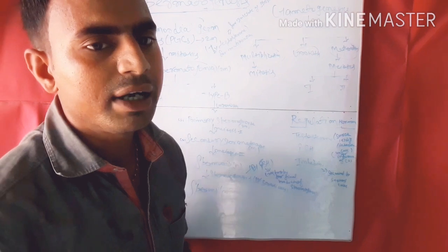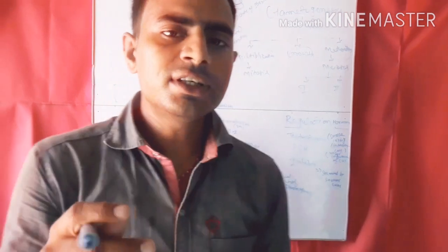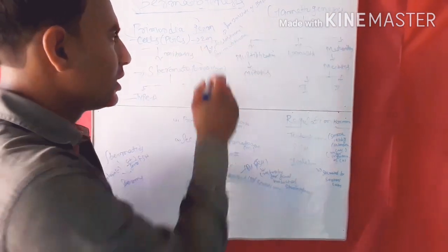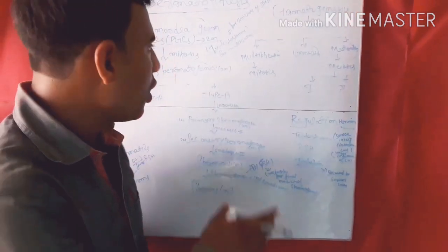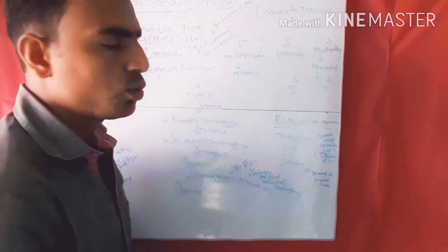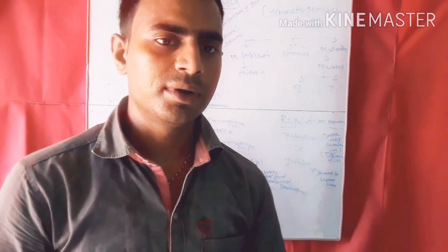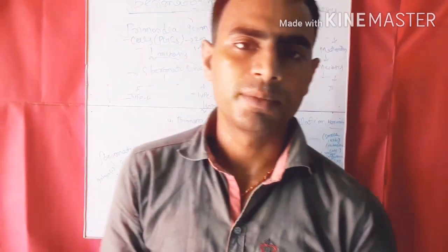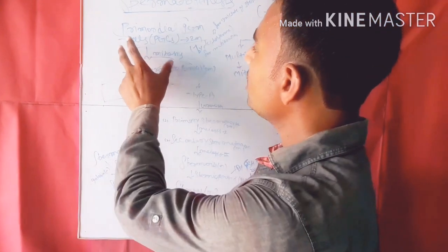In the wall of the seminiferous tubules there are cuboidal epithelium cells, known as primordial germ cells. These primordial germ cells are diploid. In the primordial germ cells, the multiplication phase occurs — mitosis happens — and they are converted into spermatogonia.